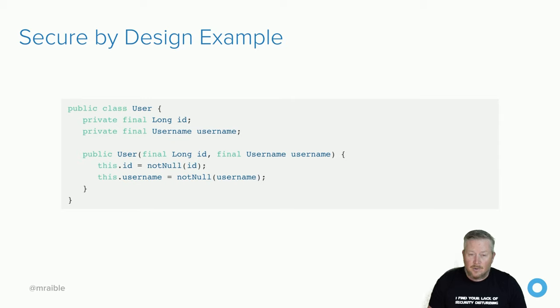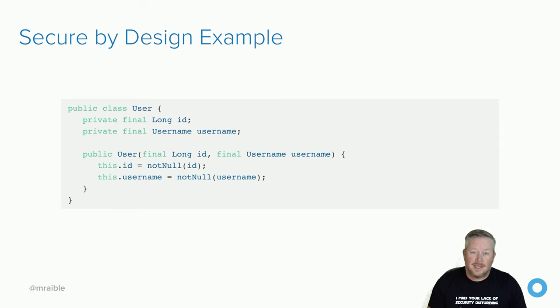You can then use that username class in your user class as a regular constructor parameter. That's much easier for developers to use, and your design makes it easier to write secure code by default. Writing and shipping secure code is going to become more and more important, especially as we put more software into robots and embedded devices that sometimes can't update themselves.